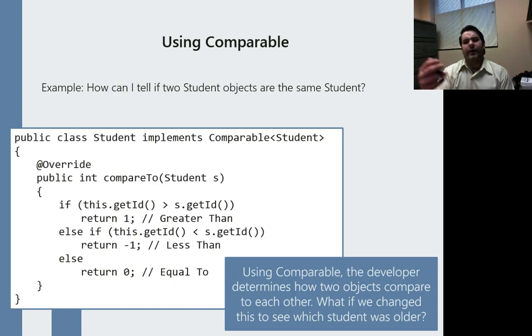What if you wanted to use the comparable interface? We were just showing it as strings. Well, if you take a look here, just like anything, you would say your class,